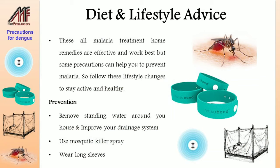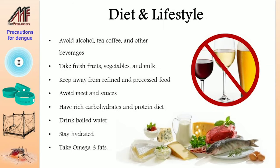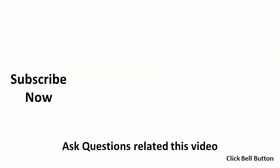For prevention: remove standing water around your house and improve your drainage system. Use mosquito killer spray, wear long sleeves, avoid alcohol, tea, coffee and other beverages. Take fresh fruits, vegetables, and milk. Keep away from refined and processed food. Avoid meat and sauces. Have a rich carbohydrate and protein diet. Drink boiled water, stay hydrated, and take omega-3 fats. Thanks for watching — please subscribe for more videos.